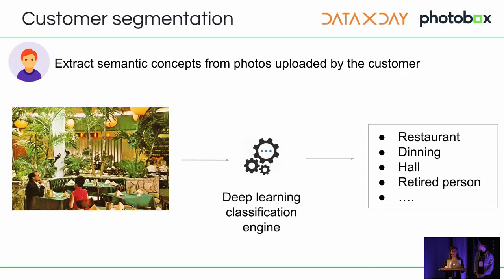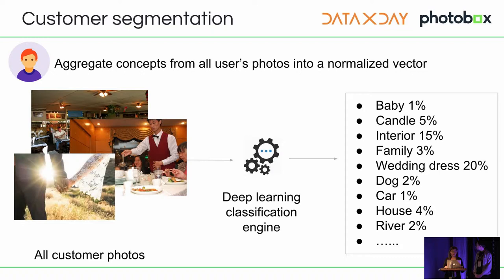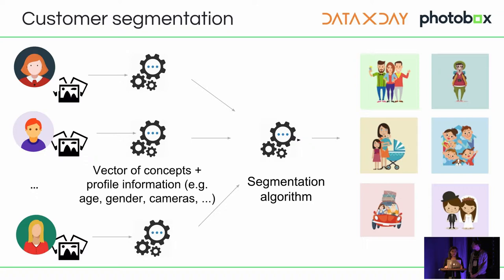A user uploads photos on the Photobox website and in the back-end we analyze their photos using a deep learning engine. This classification is adapted to the content of the client's photos. We then aggregate them into a normalized vector representing all of the user's photos. This vector accurately represents the visual content. We concatenate profile information such as age, gender, and camera type to this vector and feed it into a segmentation algorithm that groups users with common interests. The combination of content and profile information proves accurate since we get meaningful clusters.